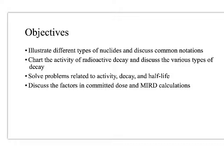I want to illustrate some different types of radionuclides and discuss common notations — the way that we notate these isotopes. This will largely be a review for nuclear medicine, but just bear with us. We are going to chart the activity of radioactive decay and talk about different decay processes. And then we're going to solve some problems related to activity decay and half-life. This is helpful for us in x-ray because it is exactly the same calculation as what we do for half-value layer for shielding.